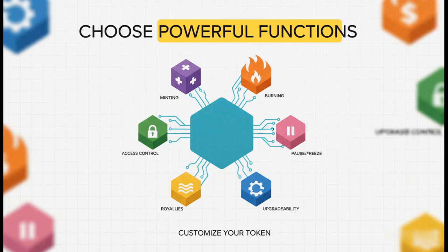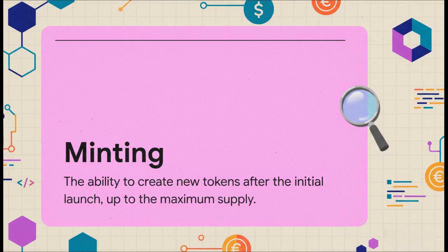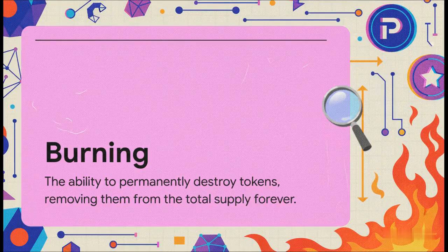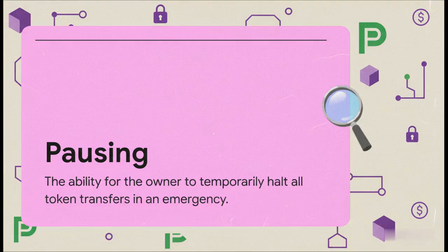Step two is where it gets cool. You can add powerful optional features to your token, like minting — this lets you, the owner, create more tokens later on if you need to. Then there's burning, which lets you permanently destroy tokens and reduce the total supply. And pausing — think of it as an emergency stop button. You can halt all token transfers if needed.